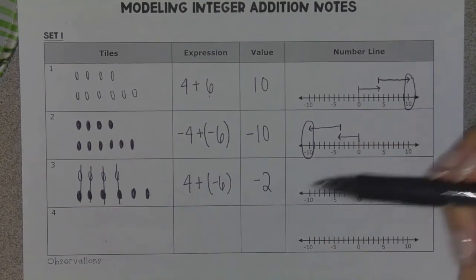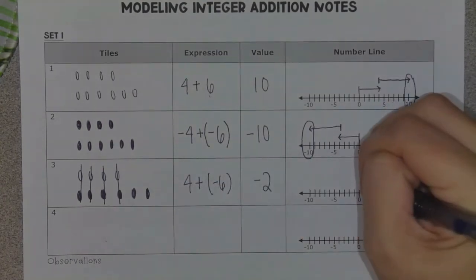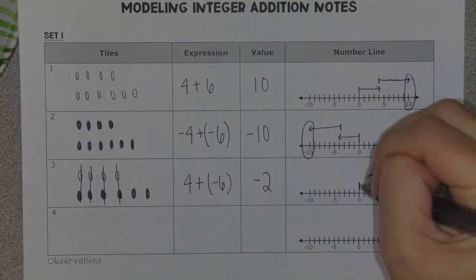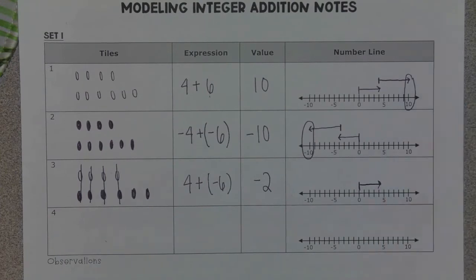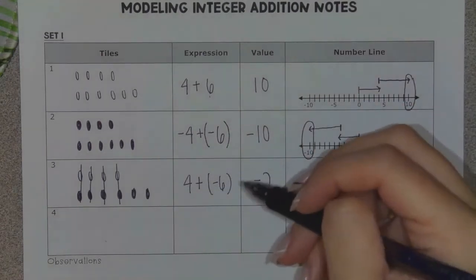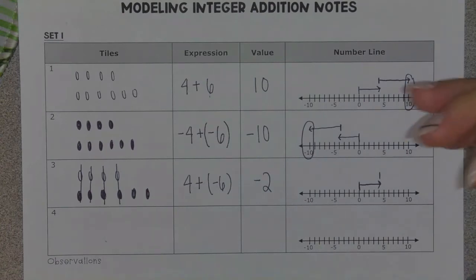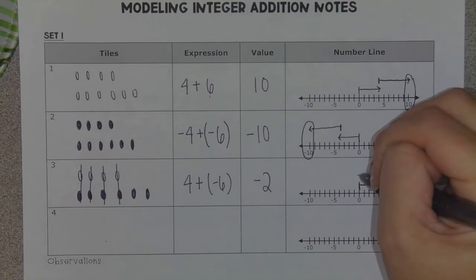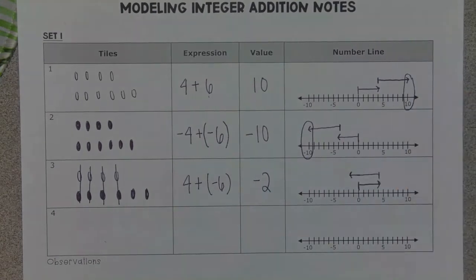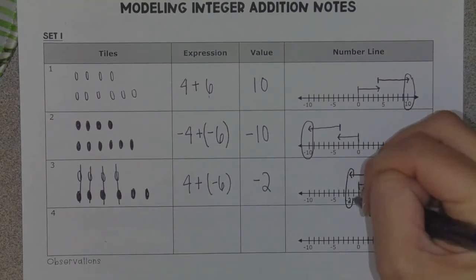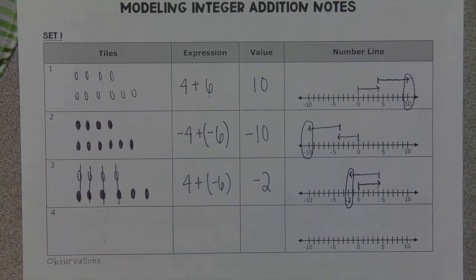Let's talk about our number line here. I'm going to start always at zero. I have four positives, so that tells me I need to move to the right four spaces. But since I have six negatives, this time I'm going to move to the left six spaces. If I go all the way back to zero, that's four spaces to the left, then two more — that gives me a total of negative six spaces moved, and it lands at negative two. So that is the value of my expression.